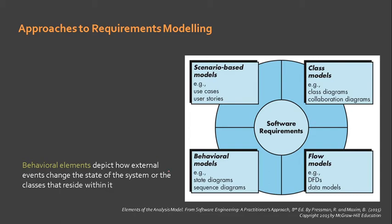The third approach is the behavioral aspect of the system — we have the behavioral models. Behavioral elements depict how external events change the state of the system or the classes that reside within it. The behavioral approach also follows an object-oriented analysis of user requirements. Some tools used in this model include state diagrams and sequence diagrams, which will be covered in more detail in our next topic.